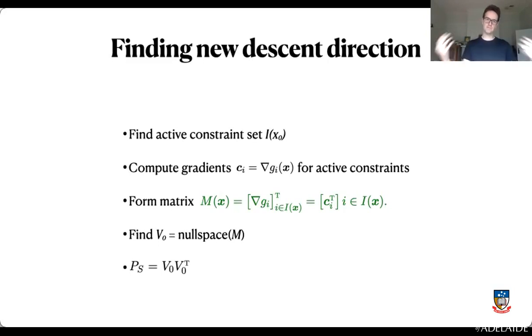We need to compute the gradients for those active constraints, the vectors, so we can form this matrix M, find the null space of that matrix M. And then this projection matrix PS is going to be V0 times V0 transpose. So at this point it gets easier to do this stuff in MATLAB. So let's actually figure out how we can move across to MATLAB and we'll do some of this stuff there.